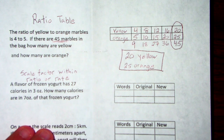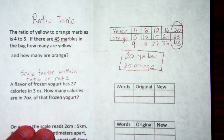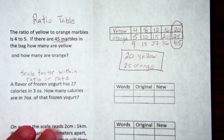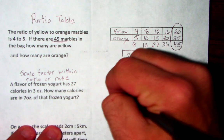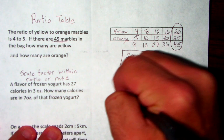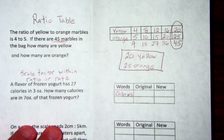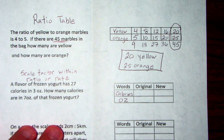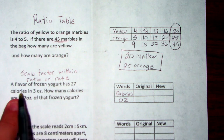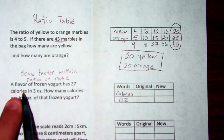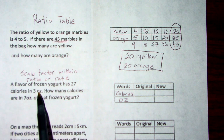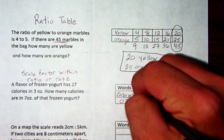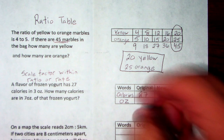This one actually sounds good right now. We have a flavor of frozen yogurt has 27 calories in 3 ounces. How many calories are in 7 ounces of frozen yogurt? So we are comparing calories to ounces. How do I know calories came first? Tells us right there, calories came before the ounces. So for every 27 calories, it is 3 ounces.